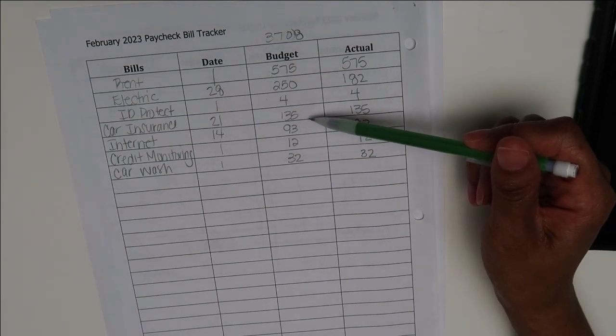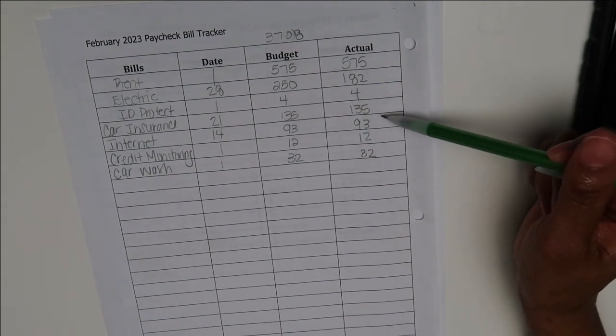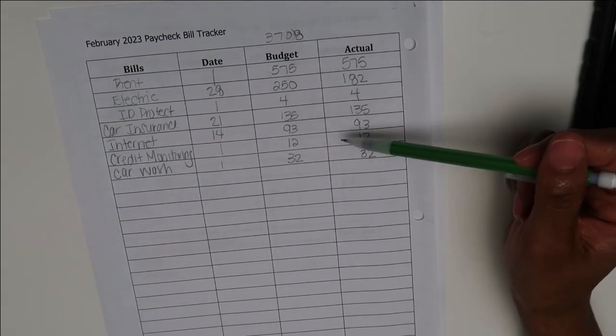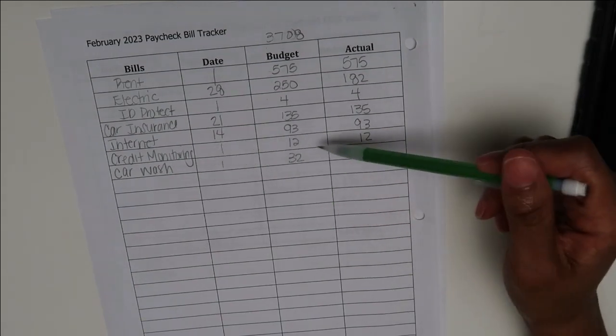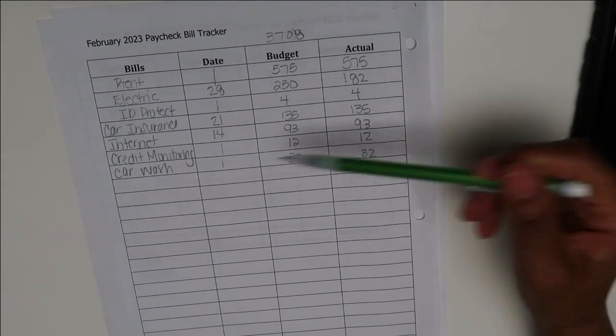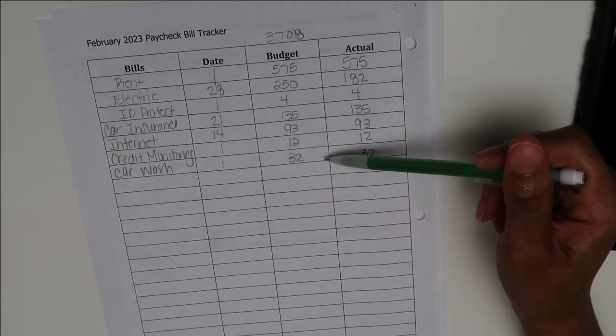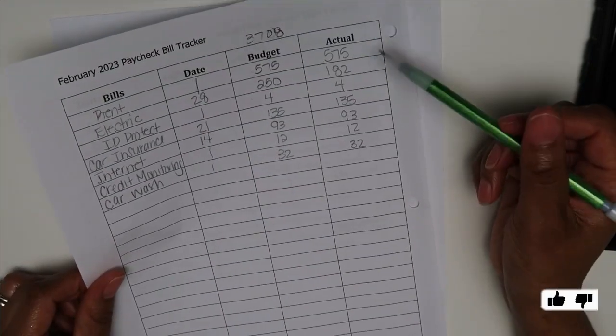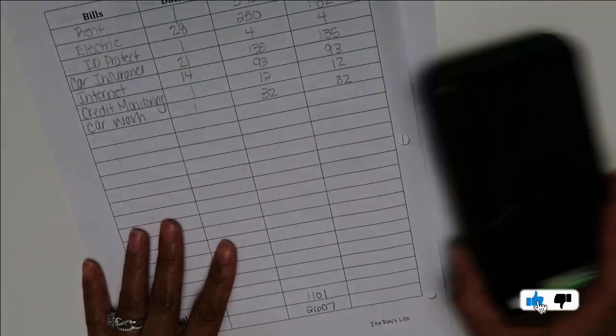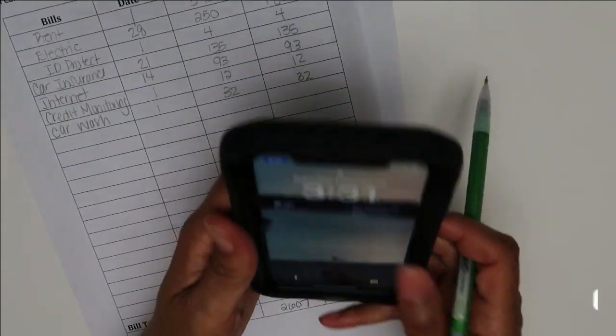ID Protect was $4, I paid $4. Car insurance was $135, I paid $135. The internet was $93 and I paid $93. Credit monitoring was $12 and I paid $12. The car wash was $32 and I paid $32. Of course, I'm not going to add that up. Let's go ahead and add all of that up.